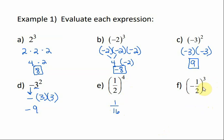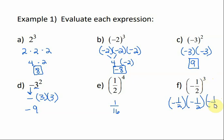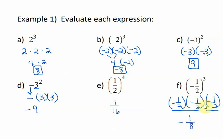For F, we have a negative fraction being raised to the 3rd power. A negative times a negative is positive, so we know those two together would be positive. Then a positive times a negative would be negative, so our answer is negative. 1 times 1 times 1 is 1. And 2 times 2 is 4, times 2 is 8. So we get negative 1 over 8.